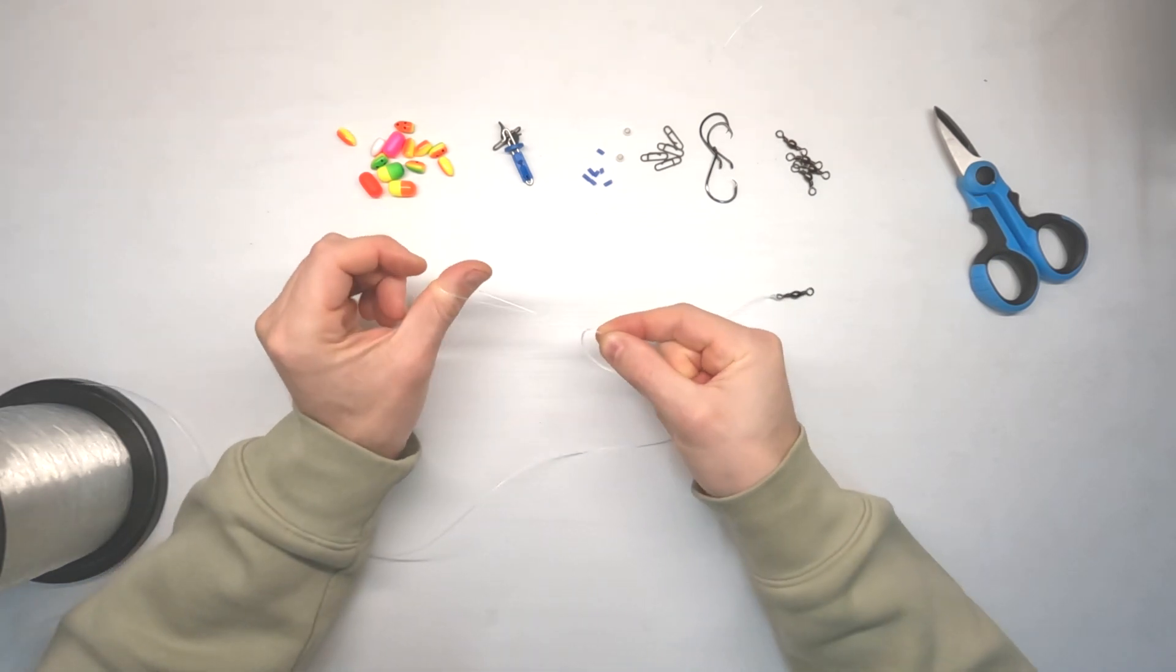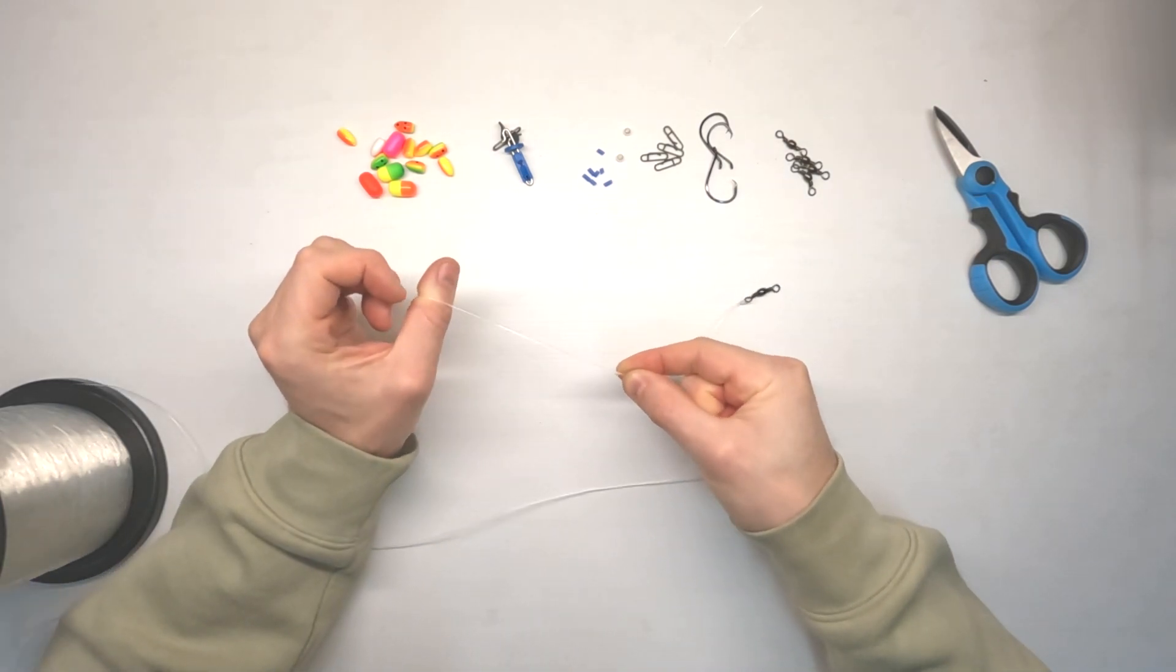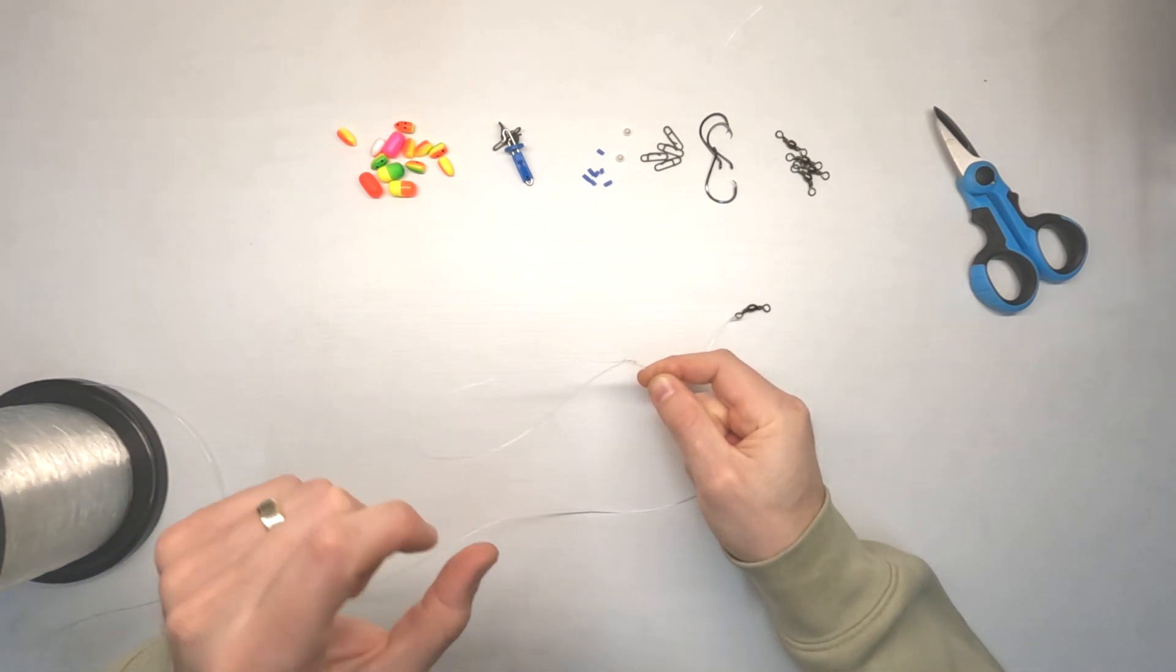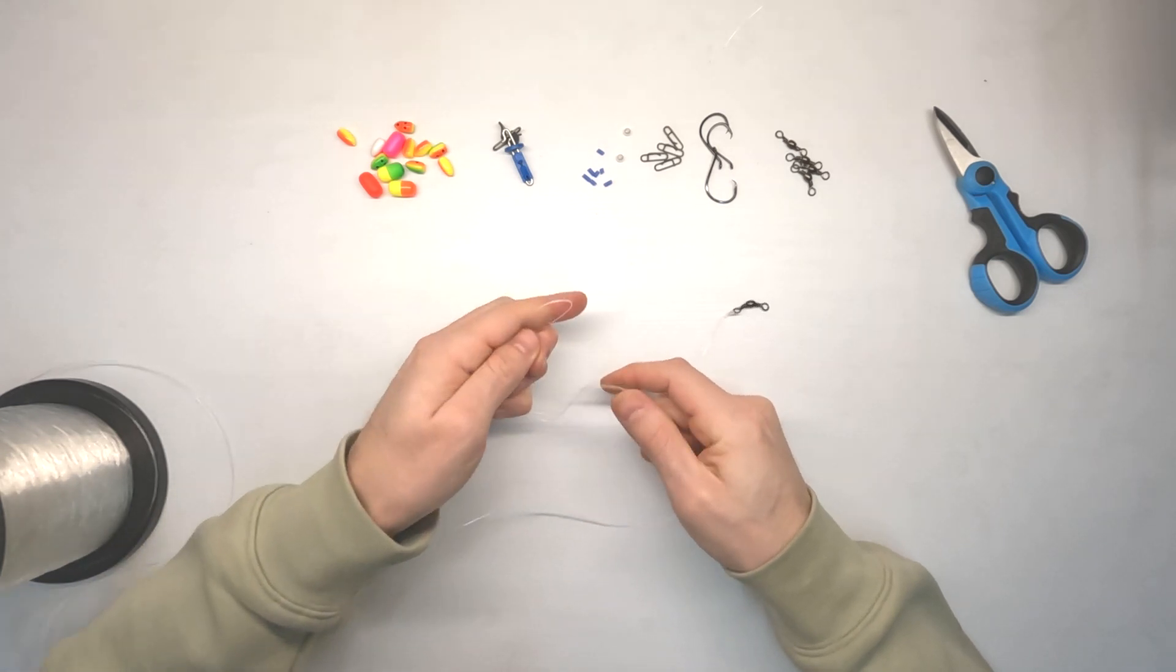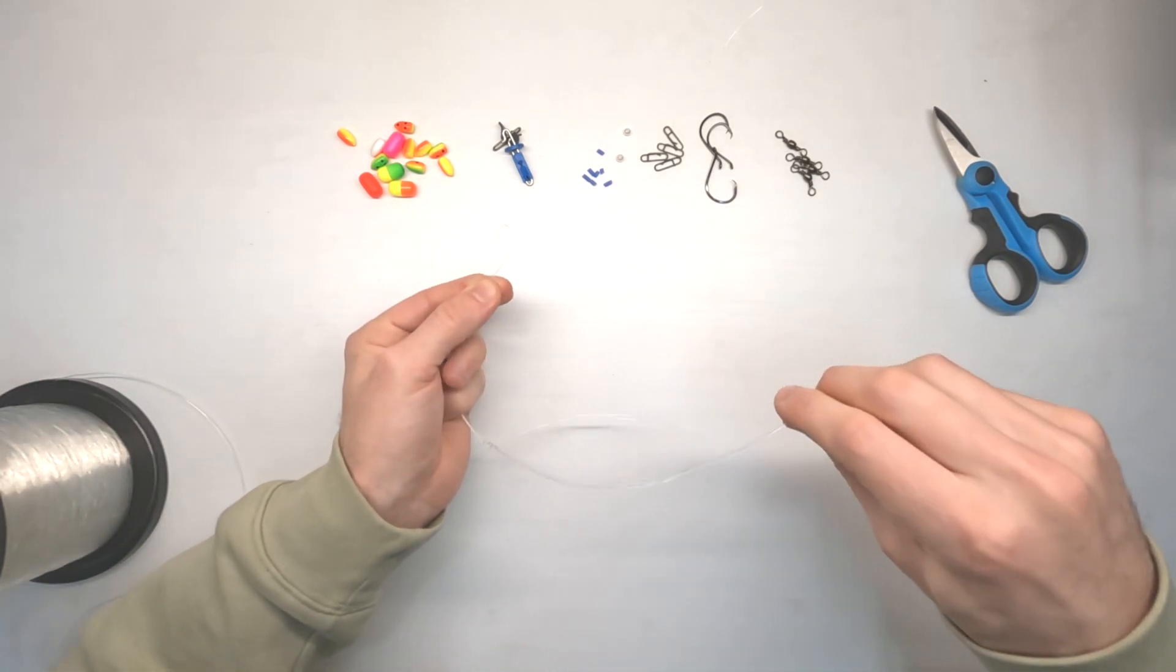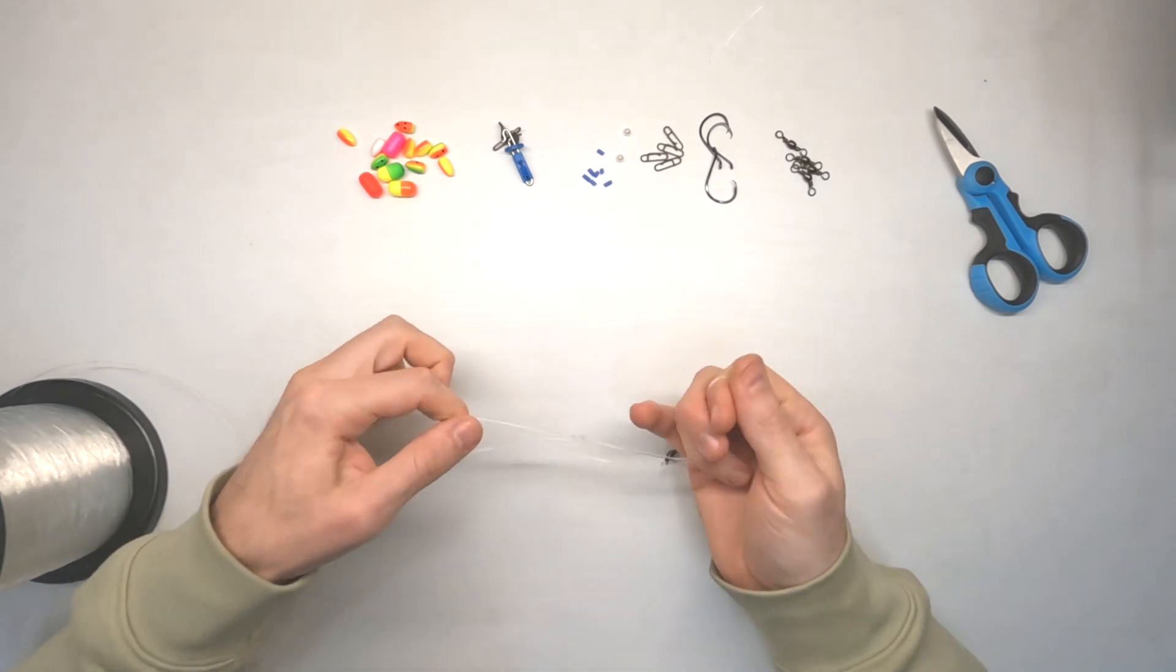Now when you draw this up you want to make sure that you draw it up underneath your thumbs and don't let go, otherwise the knot will travel this way and you end up with a really short loop which means it's going to sit very close to your backbone, which is not ideal and not what you want.